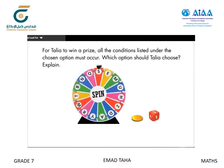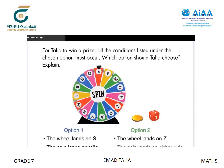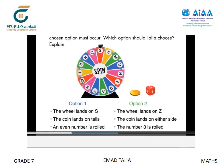This problem is key because students develop a probability model that involves a three-part compound event, and they compare the probabilities of two outcomes for each of the independent events. Students also explore a variety of strategies for determining and comparing probability. Ask students to calculate and compare the probabilities of each pair of outcomes for the three events.